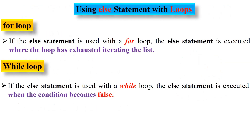Now we will discuss about using the else statement with for and while loops. Python supports an else statement to be associated with a loop statement. If the else statement is used with a for loop, it is executed when the loop has exhausted iterating the list. If the else statement is used with a while loop, it is executed when the condition becomes false.